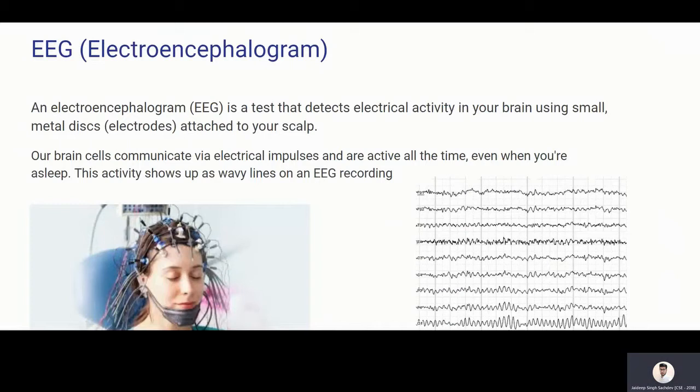These are metal disks and these metal disks record the electrical impulses between our neurons. So you can see that this person is wearing that headset and in the right side, you can see all the electrical readings, all the EEG readings it is recording.